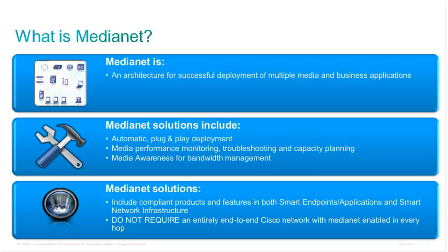The third vertical of MediaNet today is something called media awareness. The idea is to present to the network additional information about the flows going across it, allowing you to differentiate those flows or provide better visibility. You can say that a particular flow is coming from the CEO's office and provide greater quality of service, or that a call is going outside the company so it should be protected. All sorts of policies can be created within the network once you understand the context of the application usage.